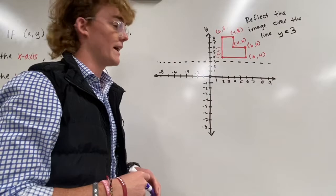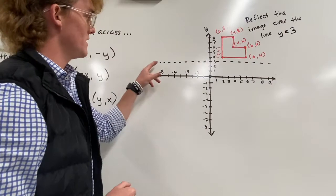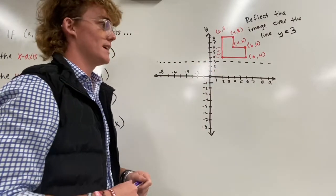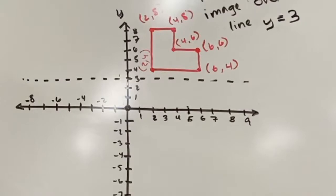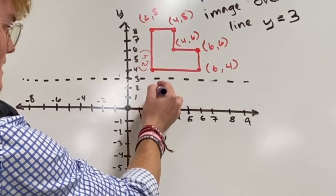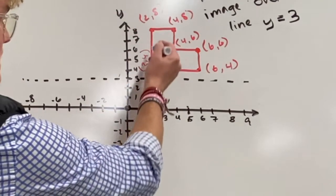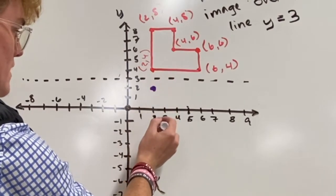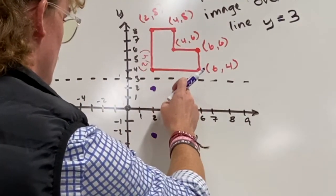This problem says reflect the image over the line y equals 3. I have six points to reflect across that line, so just follow the steps and identify how far each point needs to move. The first point at y equals 4 is one spot away, so it moves down one to y equals 2. The next point is at y equals 8, which is five spots away from y equals 3, so we move down five spots. Another point is also five spots away — move down five.